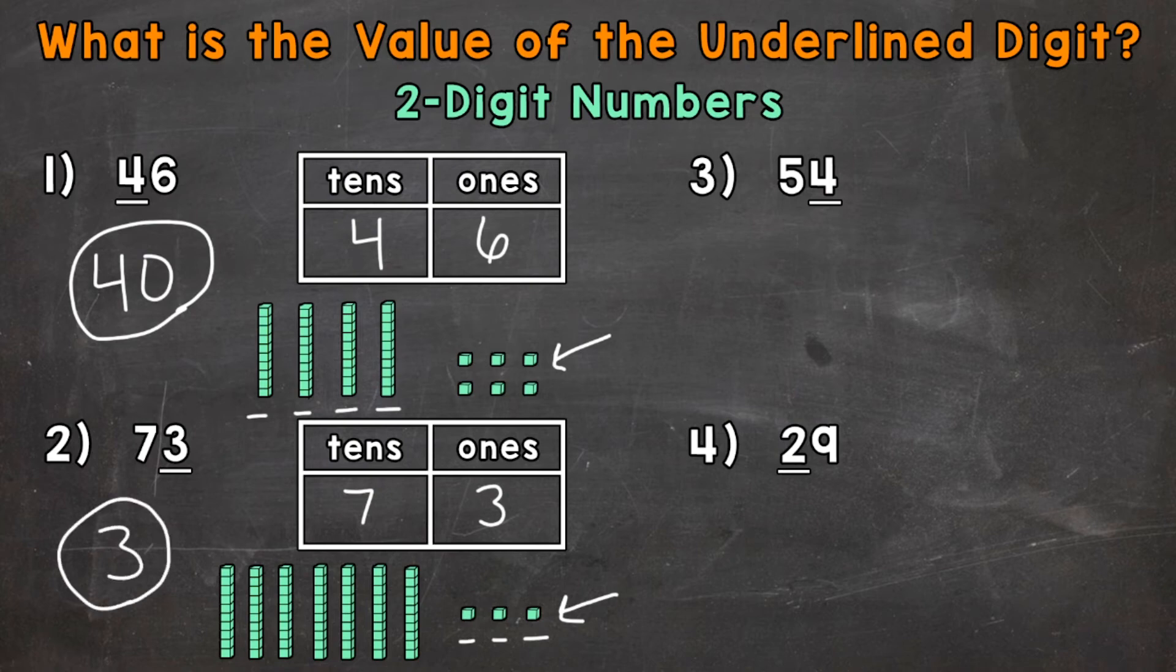Let's take a look at the 7 as well to fully understand both the digits in that number. Now the 7 is in the tens place. So it represents 7 groups of 10: 1, 2, 3, 4, 5, 6, 7. So the 7 would have a value of 70.